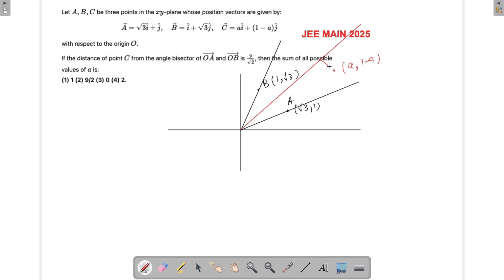And then we have to find out the distance of this point C which is somewhere we don't know really, so a and 1 minus a. And then we have to find out this distance which is given as 9 by root 2. So we have to find out which all values of a is possible. Like the other point could be over here, here, or here anywhere. So if we find out this equation of this line, then we know we can drop a perpendicular from here and find this distance.